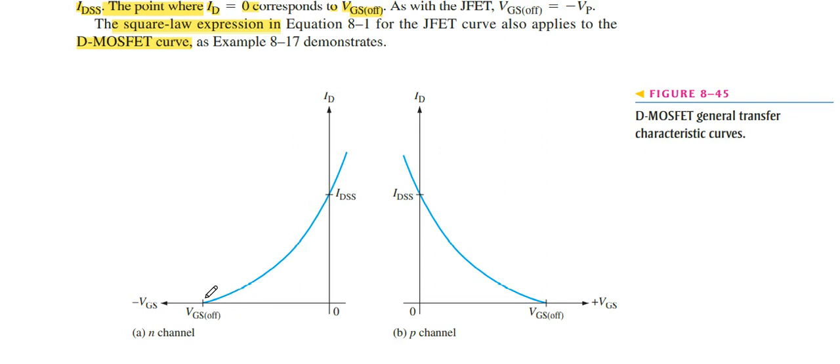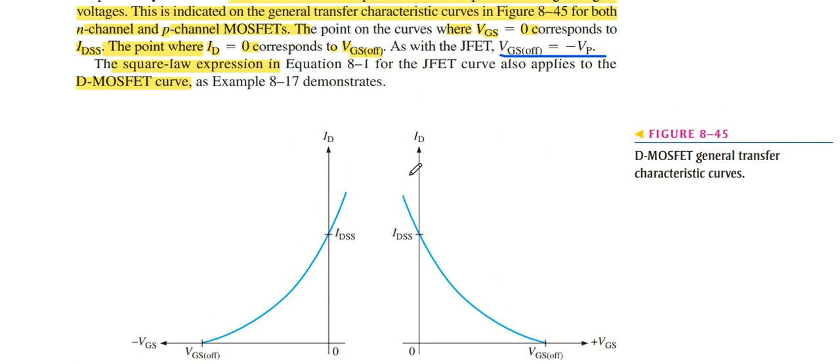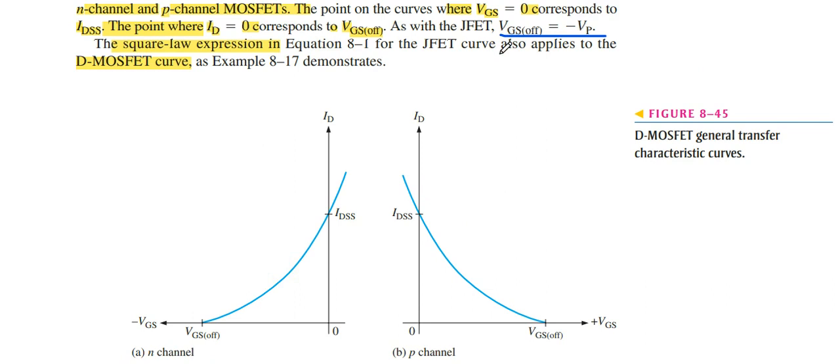While VGS off can be found from this equation that we discussed in previous lecture of JFET, when the opposite sign of VP is VGS off. When we know the VGS off, we get the value of VP, or if we know the VP, then we get the value of VGS off.